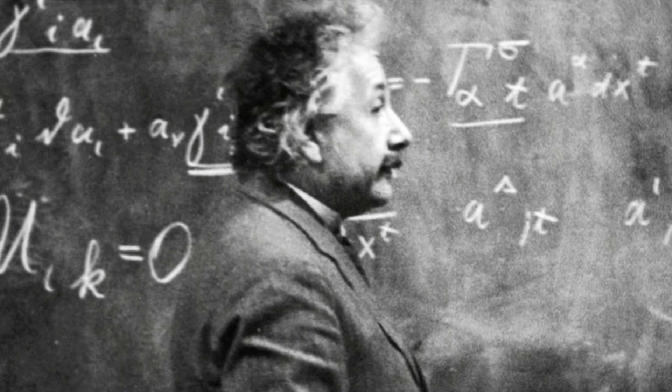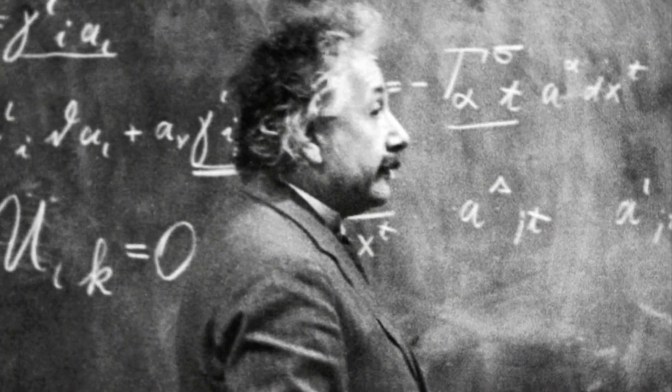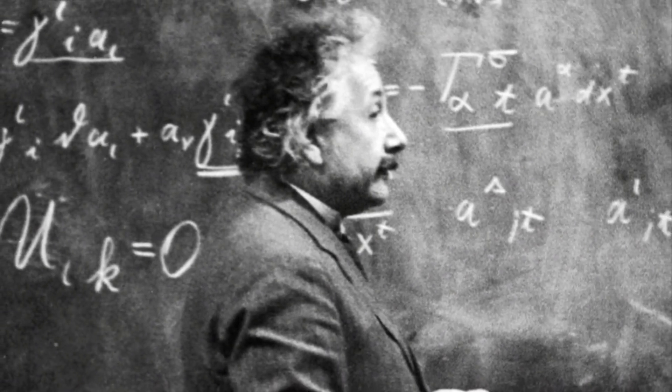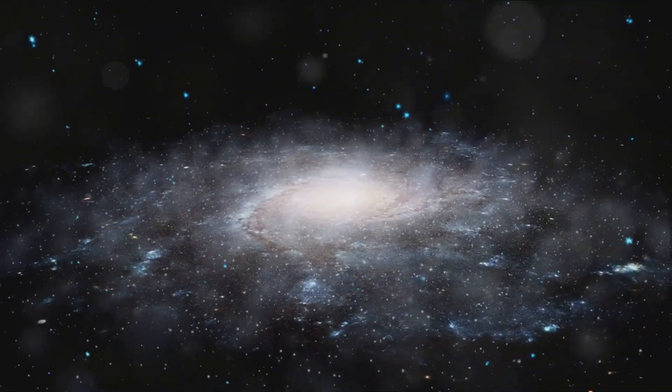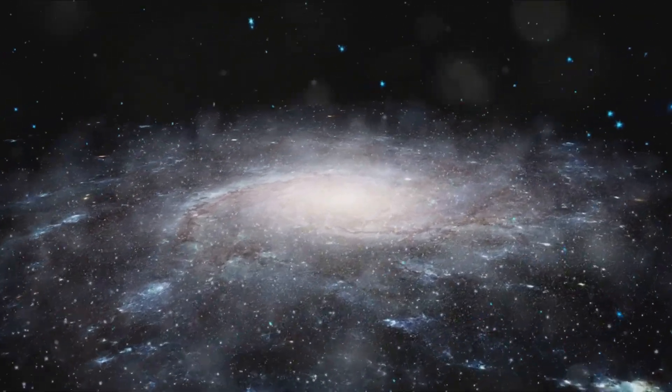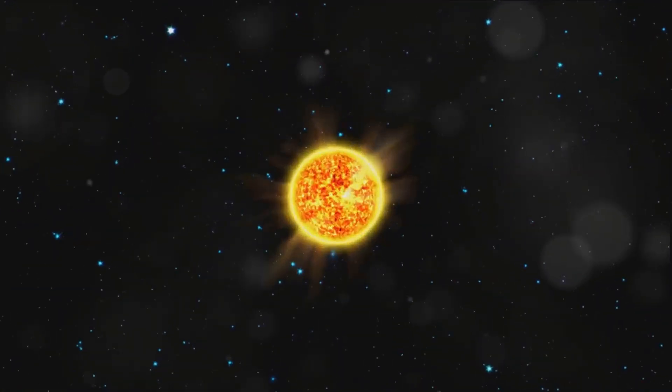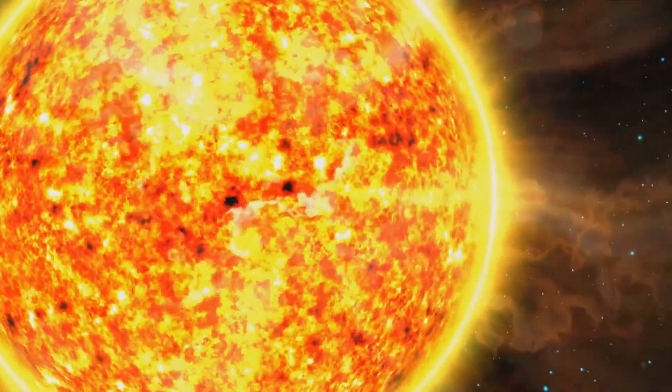Einstein's groundbreaking theories of special and general relativity both hinge on this concept of the space-time continuum. Special relativity, introduced in 1905, revealed that the laws of physics are the same for all non-accelerating observers and that the speed of light is the same no matter the speed at which an observer travels.